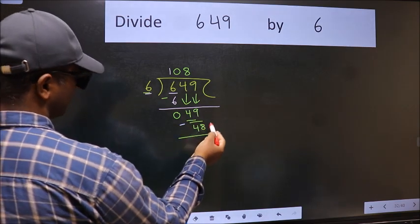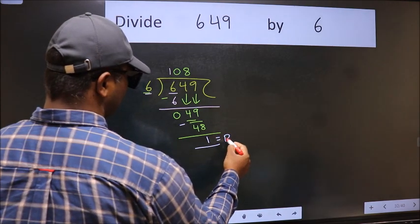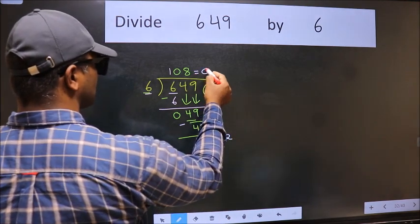No more numbers to bring down, so we stop here. This is our remainder and this is our quotient.